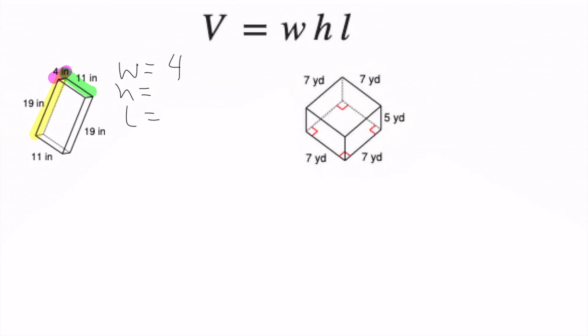So width of 4, length of 11, height. So we are going to say volume equals width times height times length. So 4 times 11 times 19. We just multiply them all together. Does it matter which order you go in on these? So that would give us 836 inches cubed, because it's a volume.